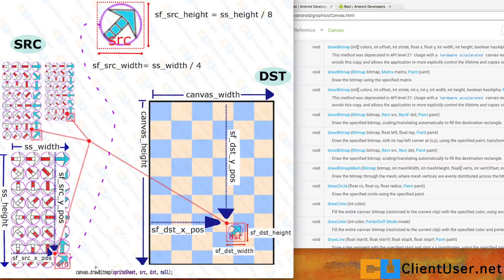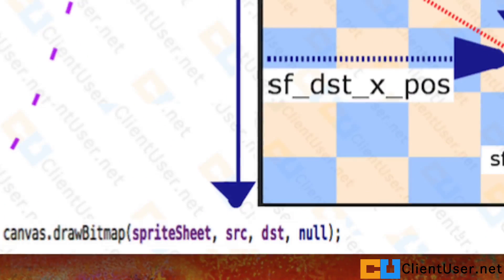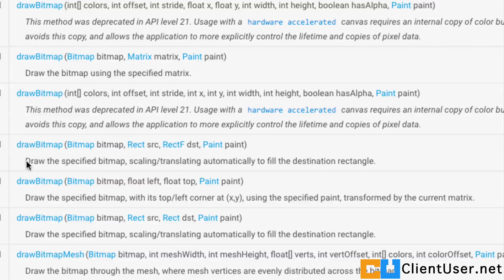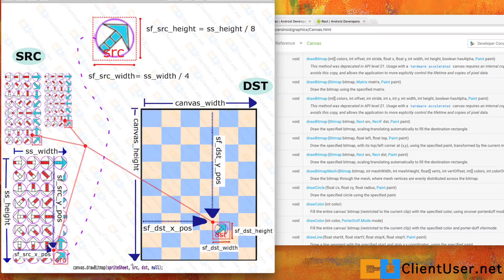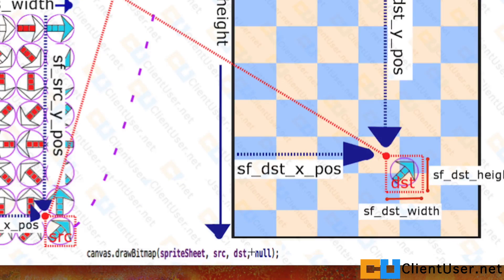We're going to be using a slightly different form of our draw bitmap method. If you look over here at the Android documentation, you've got all these different types of draw bitmaps. We used the one before where we were drawing a bitmap to a coordinate on our canvas. But this time around, we're going to be defining rectangle objects at the source, which is this rectangle, and a rectangle object at the destination.